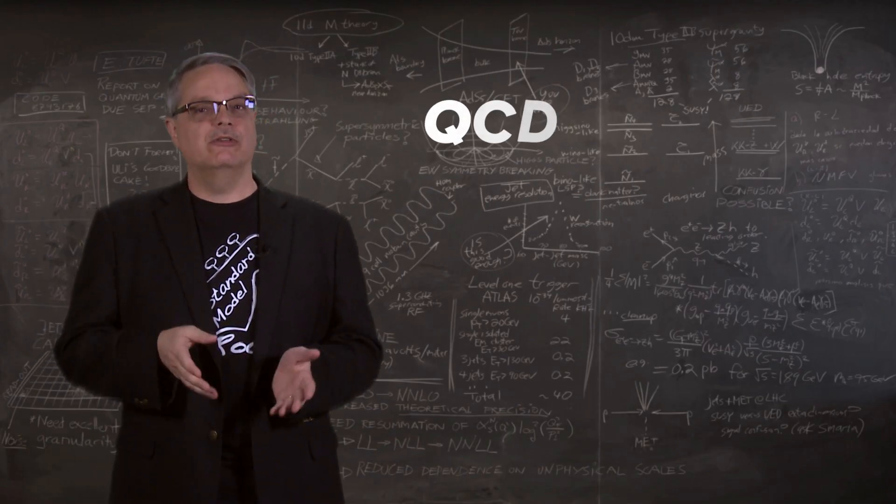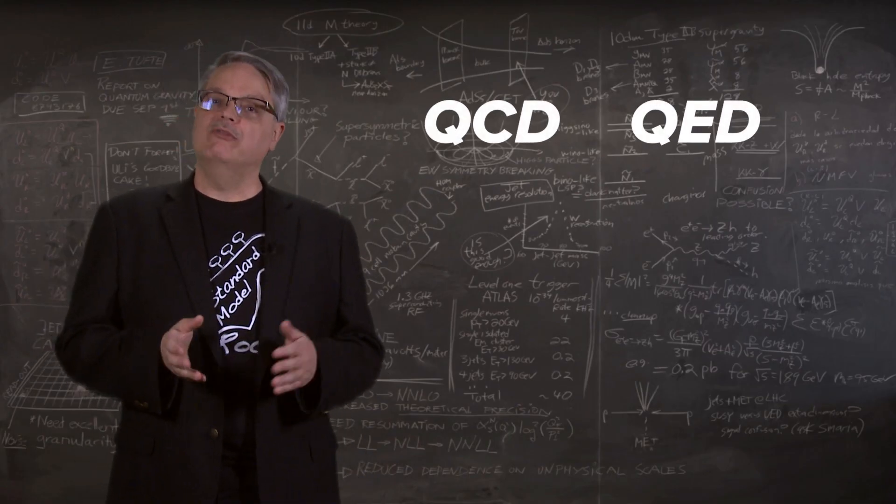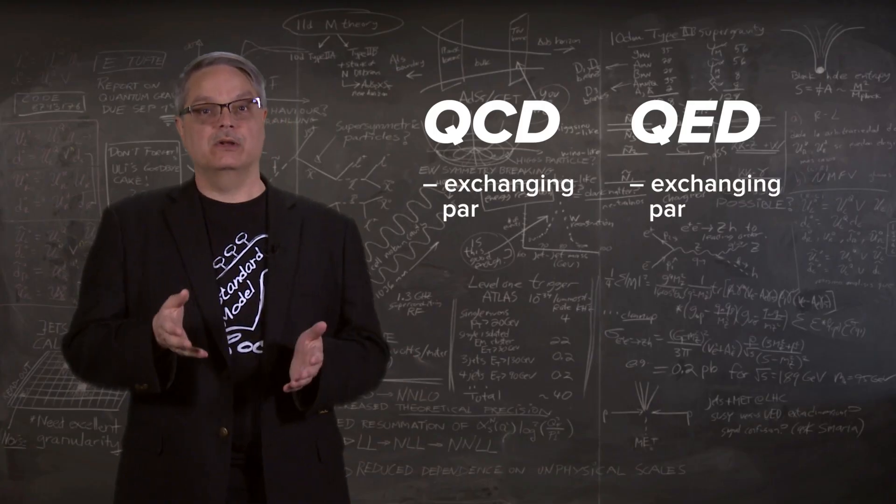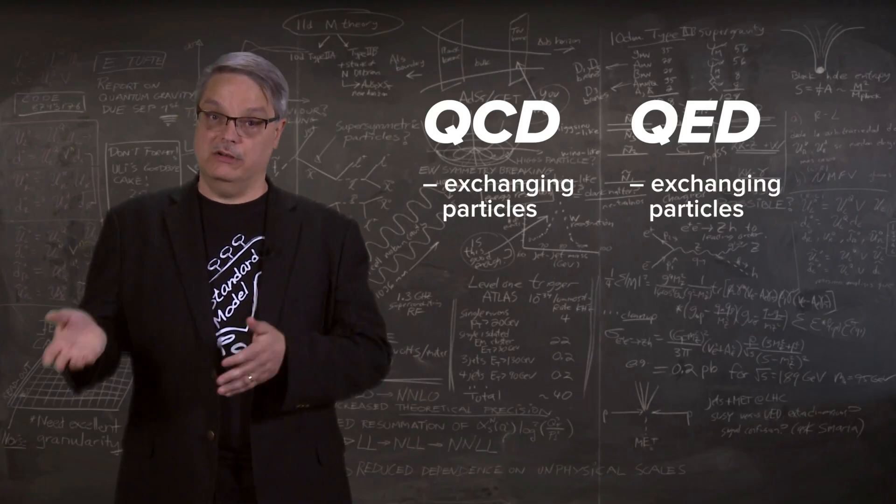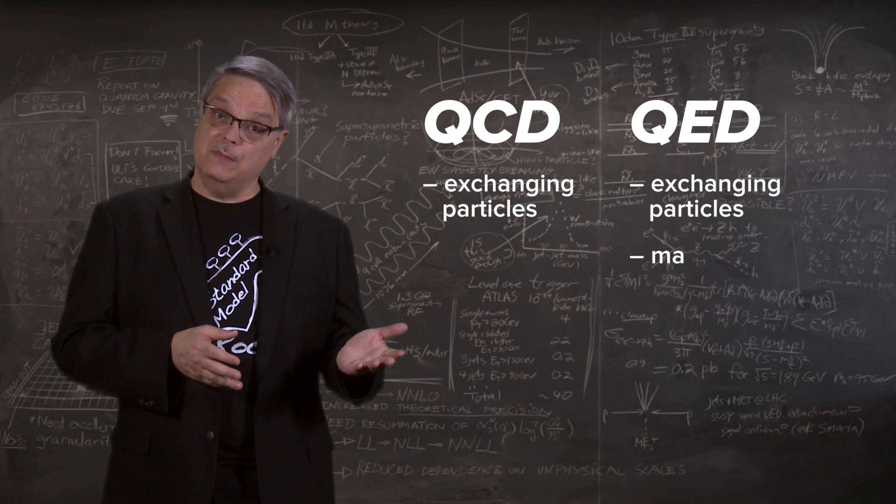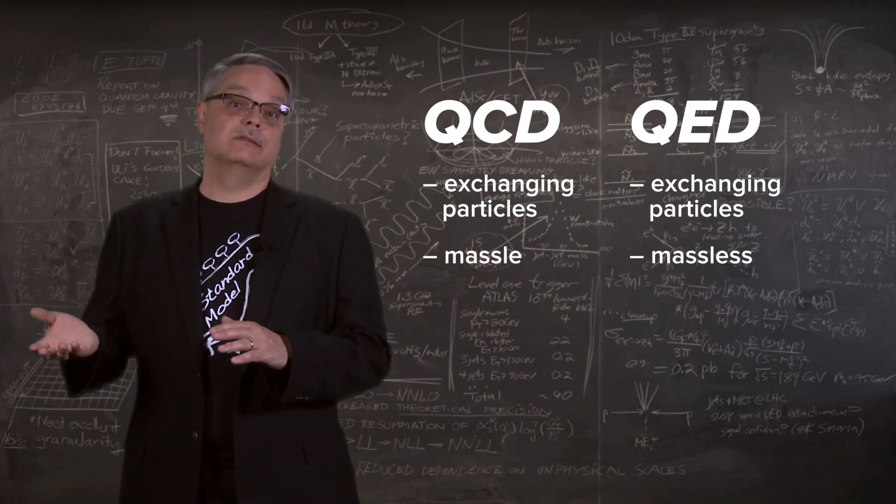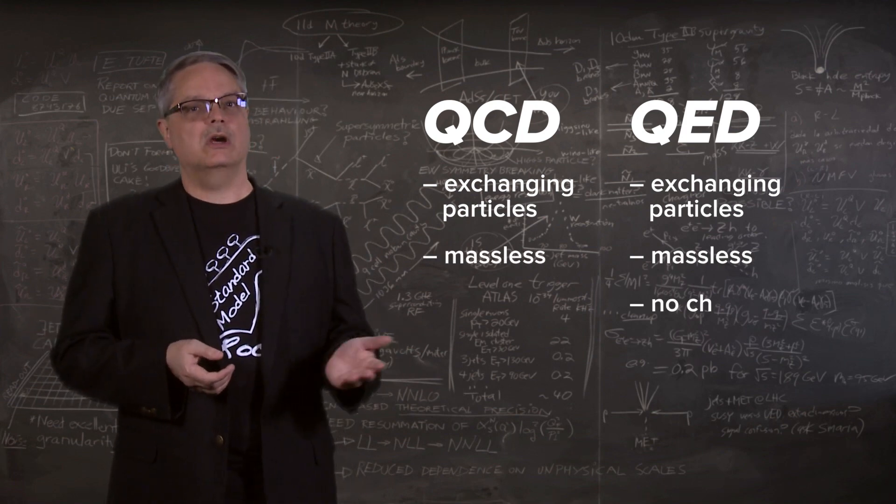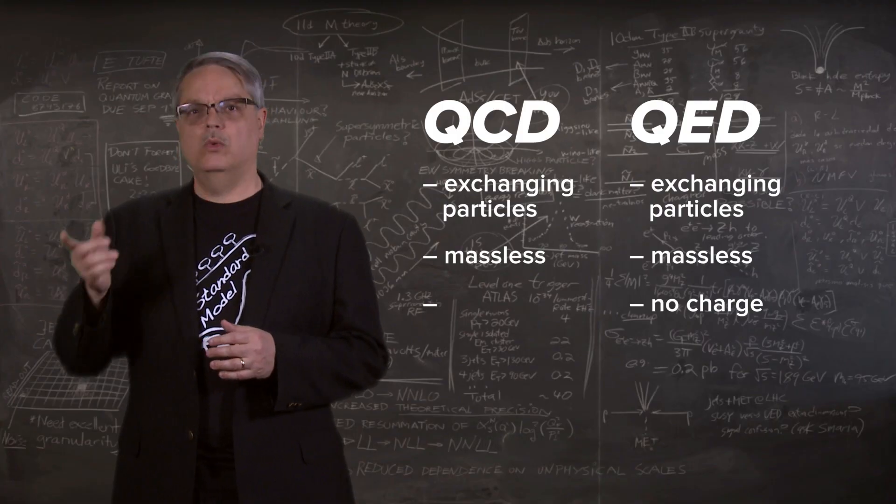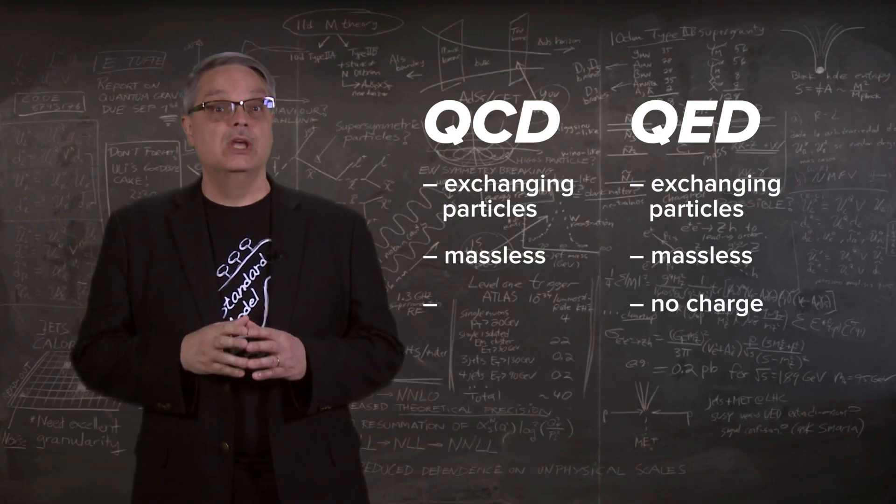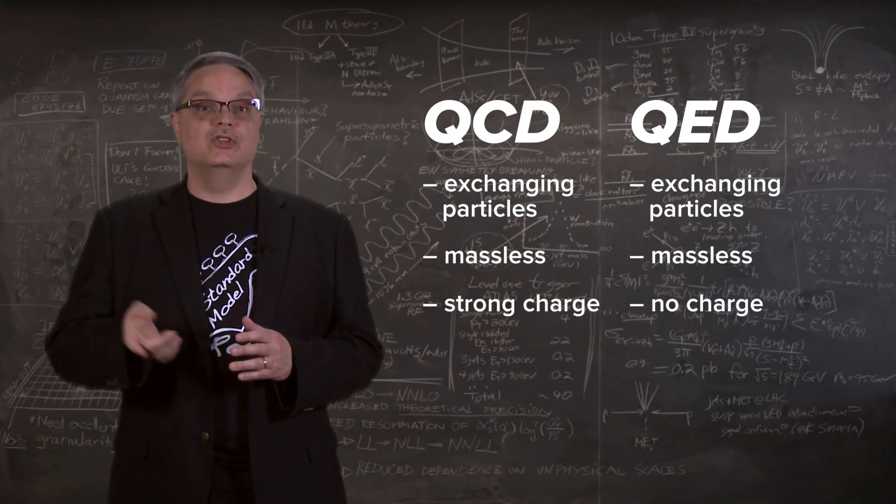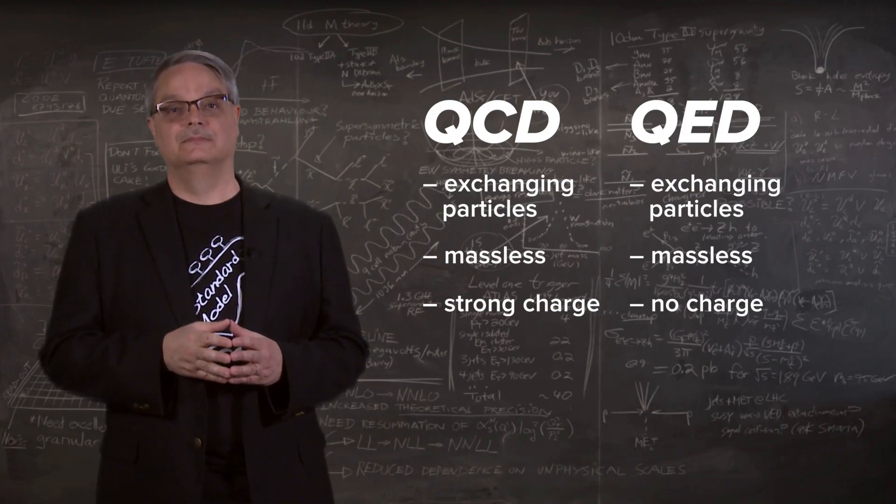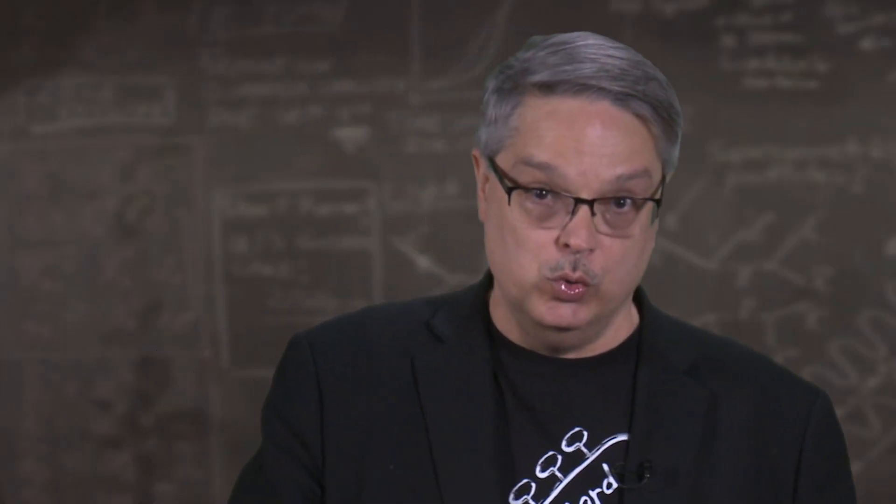So how is QCD different from QED? Both involve exchanging force-carrying particles between other particles carrying charge. The photon is massless, the gluon is massless. The photon has no electric charge. The gluon has – oh, wait a minute. There's a difference. Gluons carry the strong charge. They have color. And that little difference has a huge consequence.